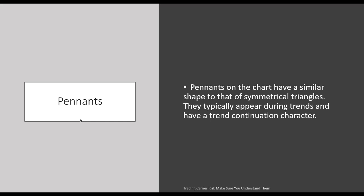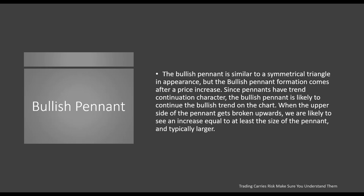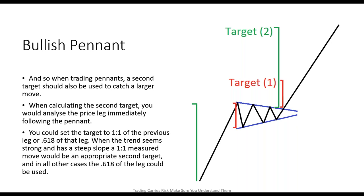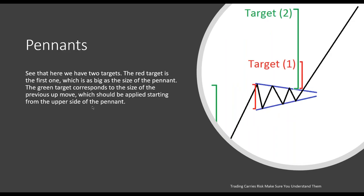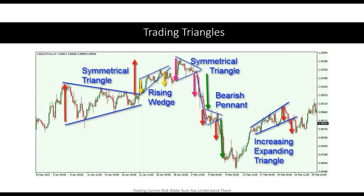We also have pennants, which on a chart have a similar shape to a symmetrical triangle. They typically appear during trends — that's the end of that comment, forget trend continuation or you start pre-predicting. With a pennant, a wedge, or a triangle we do the same width calculation for the projection. We have bearish pennants, bullish pennants, rising wedges — forget all those names. Just look for a formation on your chart that resembles a triangle.